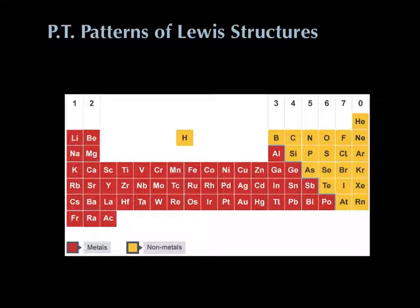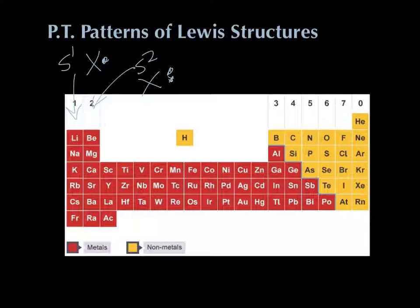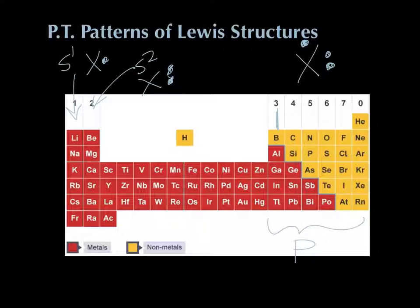There's a nice periodic table pattern for these. Everything in the first column — the s¹ configurations — all have one dot. The s² column elements all have two dots. Moving into the p block: the boron column has three dots total because they have two s electrons plus one p electron. Carbon's group gets a fourth electron — p1 and p2. Nitrogen's group has five dots, and it doesn't matter whether we're talking about nitrogen, phosphorus, or arsenic — they all follow the same pattern.